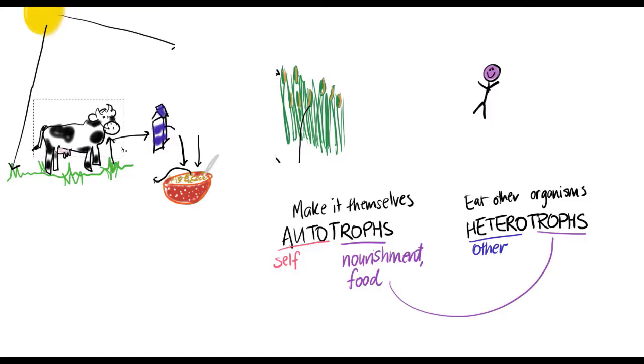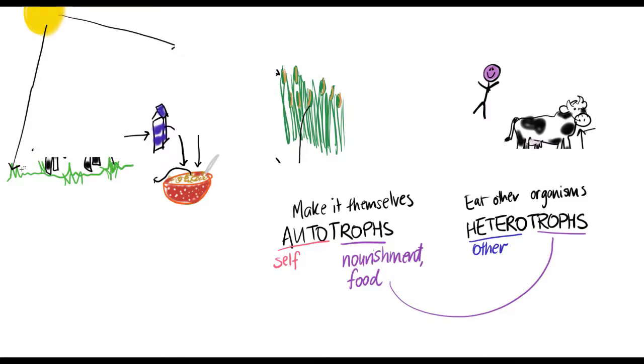The cow eats the grass to get energy so it's a heterotroph. And the grass gets its energy from the sun so it's an autotroph.